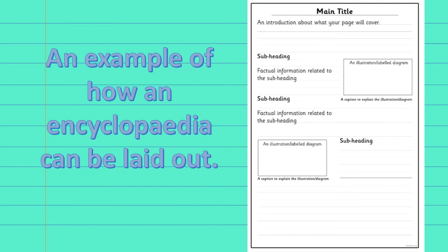Here's an example of how an encyclopaedia could be laid out. There's a main title, an introduction of what your page will cover, a subheading with factual information related to that subheading, a further subheading with more information, and then illustrations and labelled diagrams.